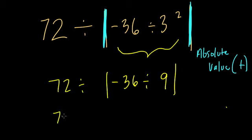And now we have 72 divided by the absolute value of this. Negative 36 divided by nine is negative four. We're taking the absolute value of negative four.